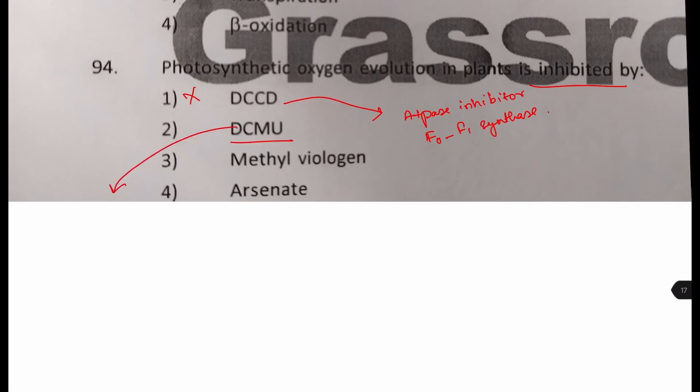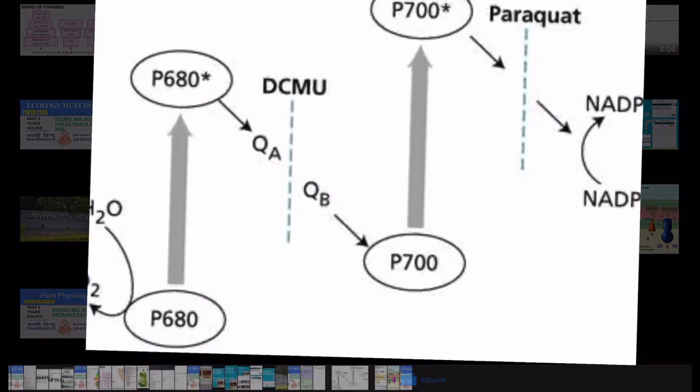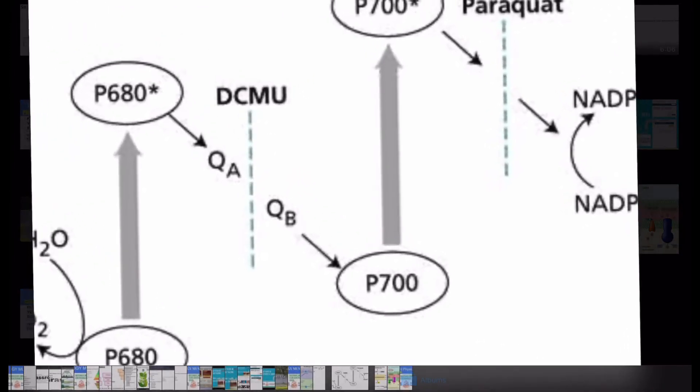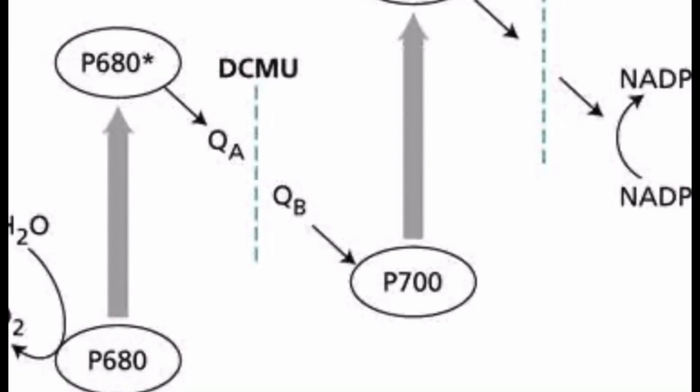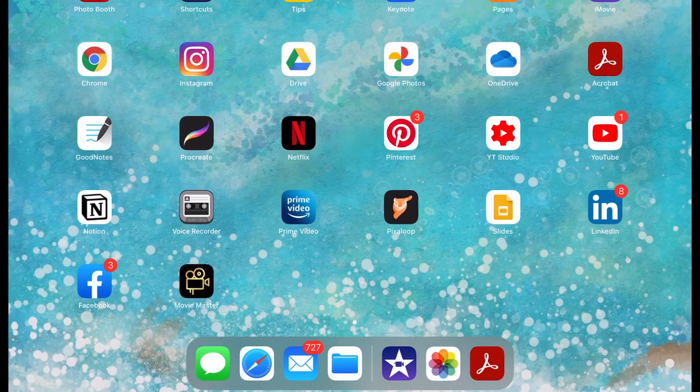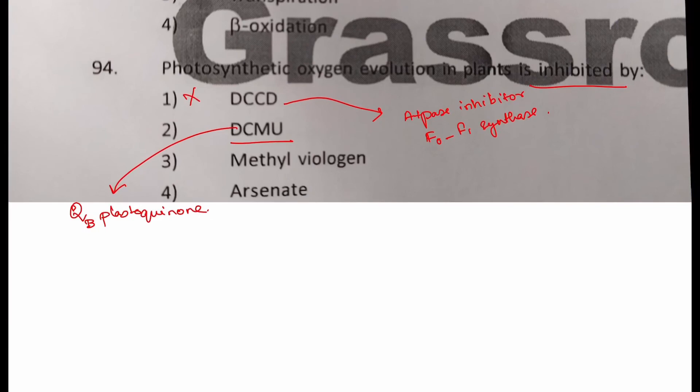Next is DCMU. DCMU is actually an inhibitor of photosynthesis. What it does? It blocks the QB of plastoquinone, PS2. The electron transport is blocked. We will give an image over here. But, from here, photosynthesis inhibitor is only DCMU. Okay. Next question.